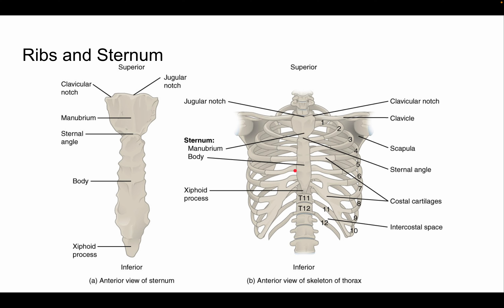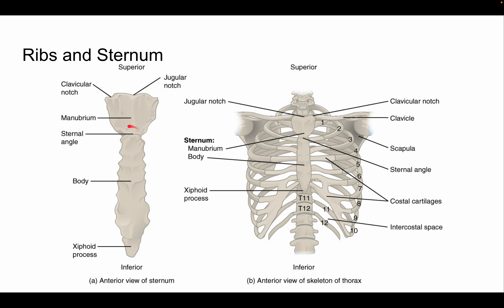Let's go over the anatomy of the sternum, which is very simple. The sternum is the centerpiece where most ribs articulate. At the top we have the jugular or suprasternal notch — it's better to call it the suprasternal notch. We also have bilateral clavicular notches, which articulate with each clavicle, and we have the manubrium of the sternum.